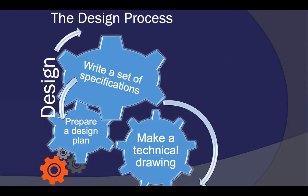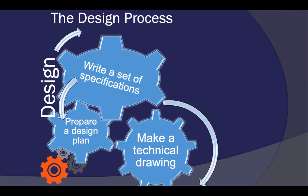The next phase of the design process is moving into production, but we actually have to make some plans before we can produce something. So we have to write a set of specifications — we've heard that word abbreviated before as 'specs'.